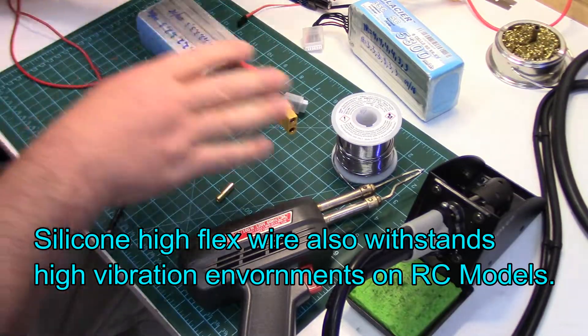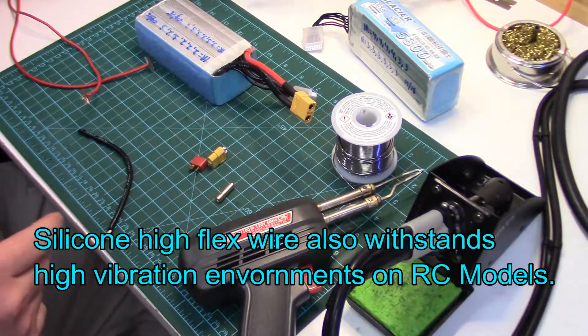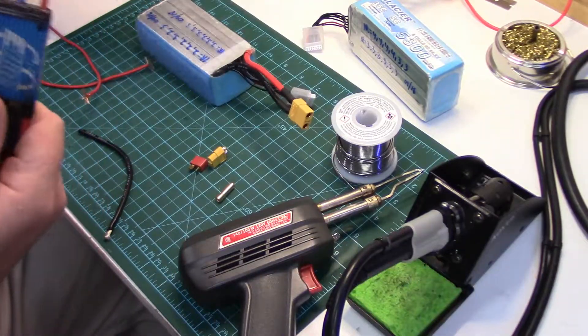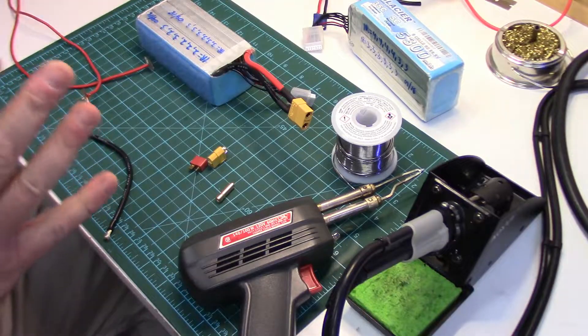So that's primarily what silicone high-flex wiring is. And you'll see it on everything, your ESCs, your batteries, basically everything.